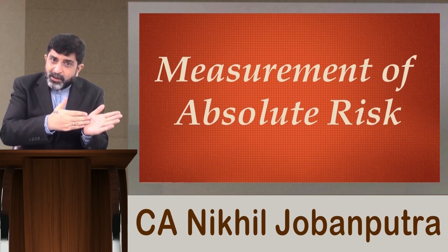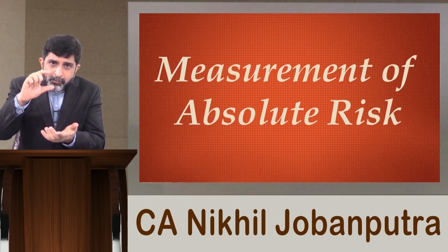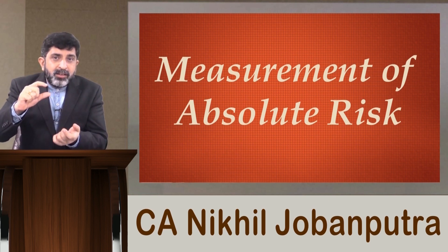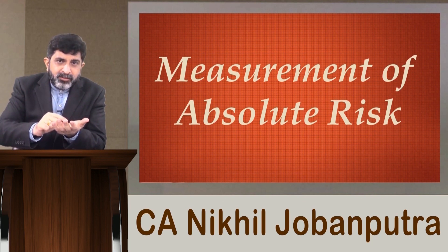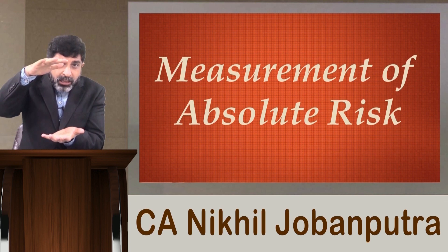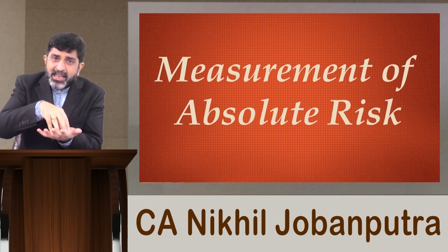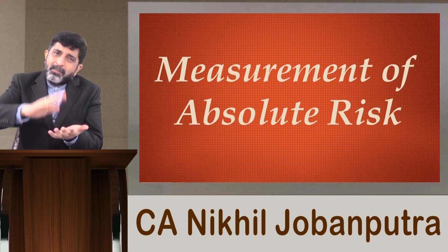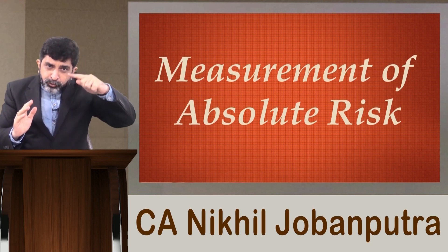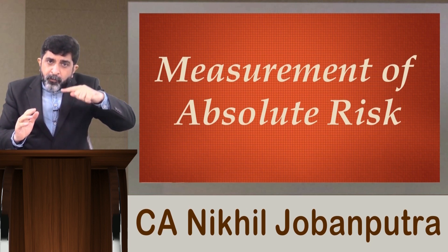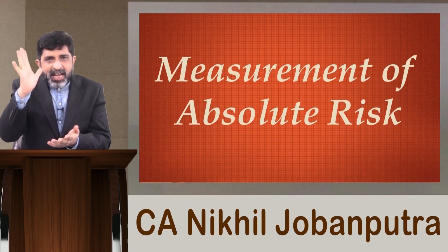Another batsman, batsman B, also has a batting average of 50 runs. But the range of his score is from 40 runs to 60 runs — a narrow range. That means whenever he goes to bat, the minimum score he attains before getting out is 40 runs and maximum is 60 runs. Even so, his batting average is 50 runs.